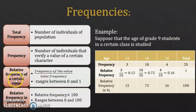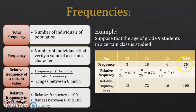The relative frequency of a certain value is the ratio: frequency of the value over the total frequency. It ranges between 0 and 1. So the relative frequency of 13 is 3 over 25, which gives 0.12. The relative frequency of 14 is 18 over 25, which is 0.72.